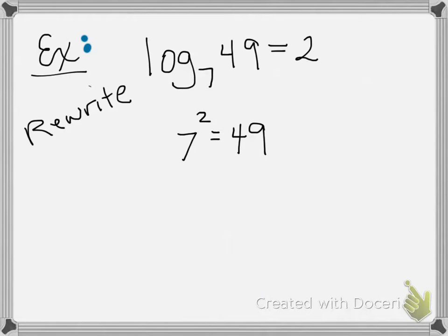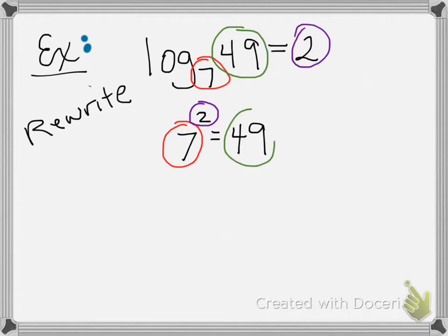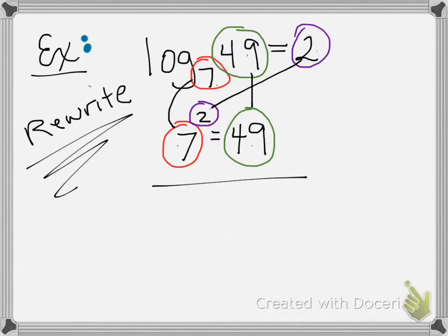What I'd like for you to see is where each part lines up. The base of 7 turns out to be the base number over here. The 2 that's on the other side of the equals is my exponent, and the 49 is right here. So the 7 moved to here, the 2 moved to here, and the 49 moved to here. I always say base to the equals number. 7 to the second power equals 49. And that's true. 7 squared does equal 49.